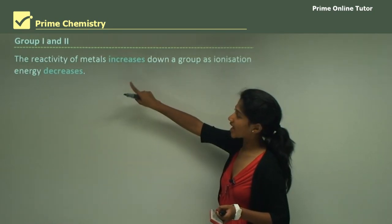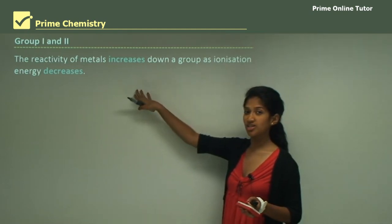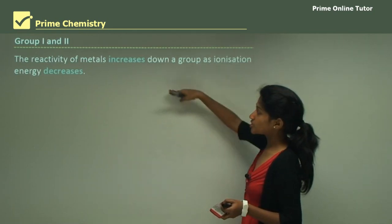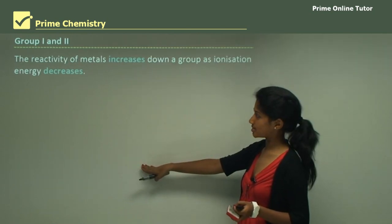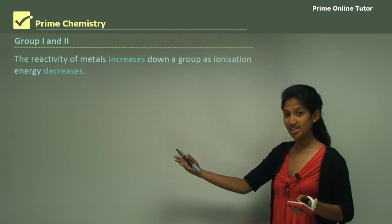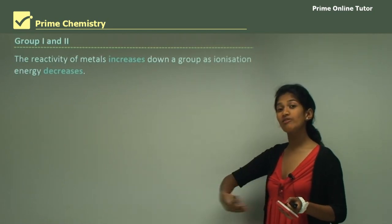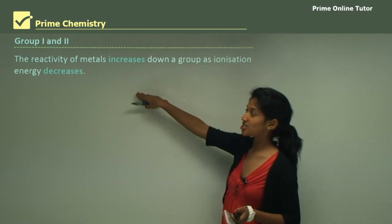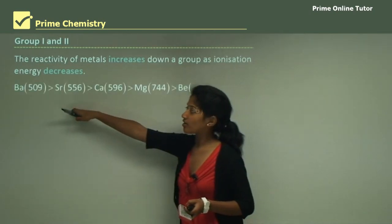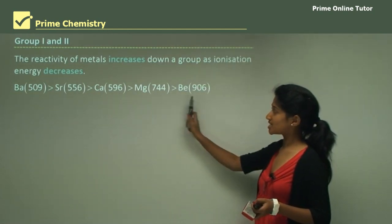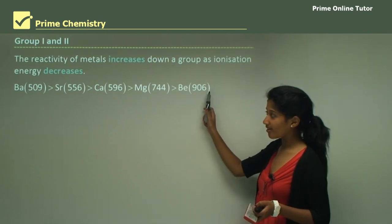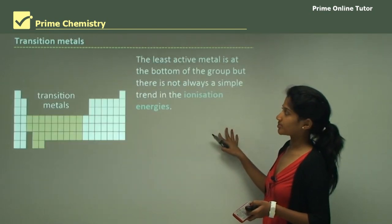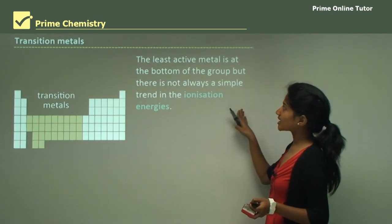Within Group 1 and 2 elements, the reactivity of metals increases down a group as ionization energy decreases. A more reactive metal tends to give away its electrons more easily, so it doesn't require high energy input — that's why its ionization energy is low. For example, barium has a much lower ionization energy than beryllium, which is at the top of the group and has quite a high ionization energy.